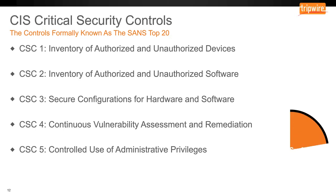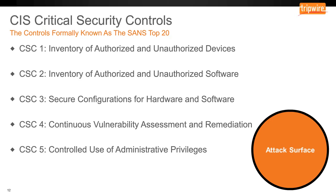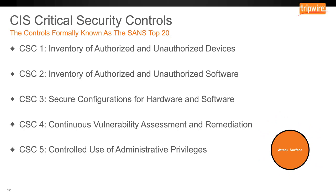The goal of these critical security controls is to know what your attack surface is — because everybody has one. CSC 1 and CSC 2 are about knowing your attack surface; you can't protect what you don't know you have. CSC 3 is for hardening your environment and shrinking your attack surface as small as possible. CSC 4 covers vulnerability scanning and log management to monitor your environment and identify the highest risk profiles. The three common themes are: know your attack surface, shrink your attack surface, and monitor your attack surface.